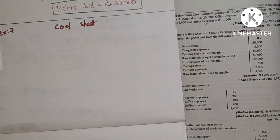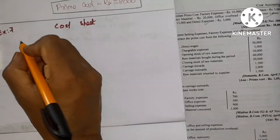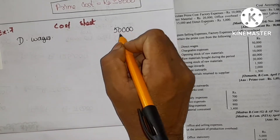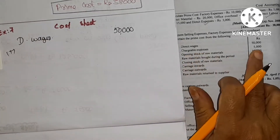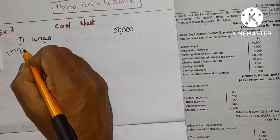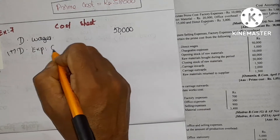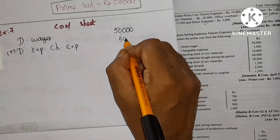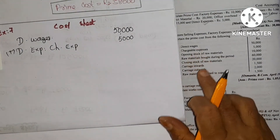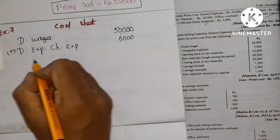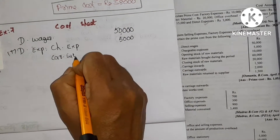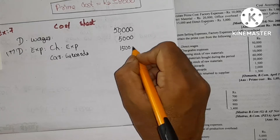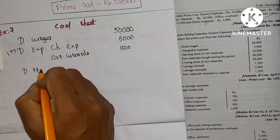Direct wages is 50,000. Chargeable expenses is 5,000. Next, carriage inward — that is a purchase expense under direct material — is 1,500.